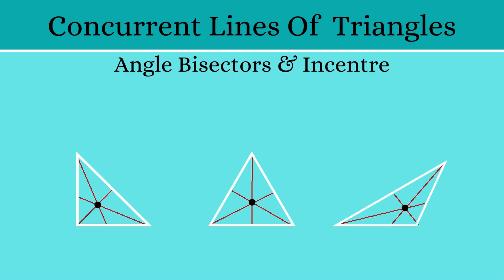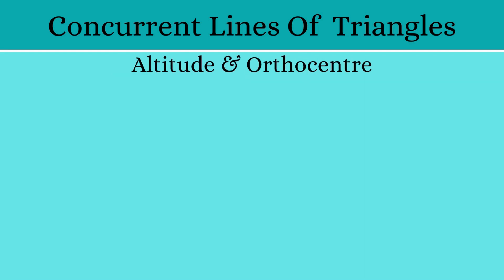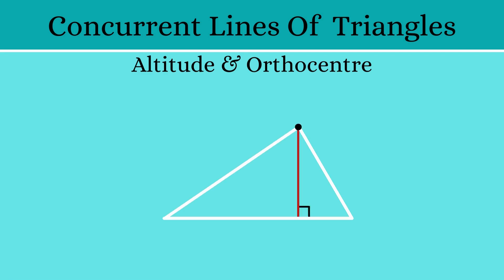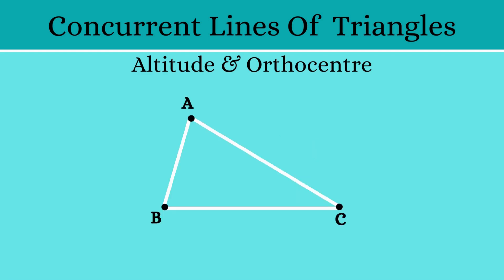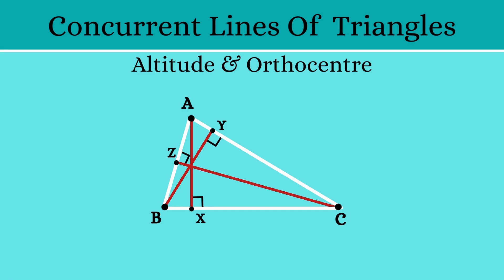Finally, let's move on to altitudes. The altitude of a triangle is a perpendicular line drawn from one of the sides to the opposite vertex. Let's consider triangle ABC and construct the altitudes AX, BY and CZ. We'll find that these three altitudes intersect at a single point. Let's mark this point as O, and this point O is called the orthocenter of the triangle.